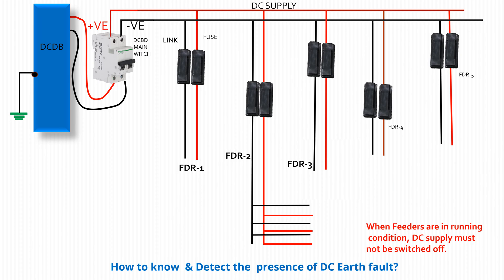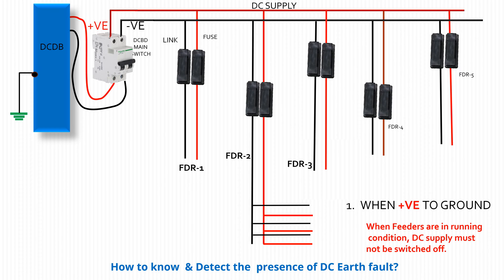In this section, detection of positive earth fault is shown here by animation to give a simple overview on this subject. It was seen in many cases that without using a fault locator, fault detection by this process was easier. This was the process of detection of DC earth fault by using a multimeter. DC negative earth fault may be detected by the same process.